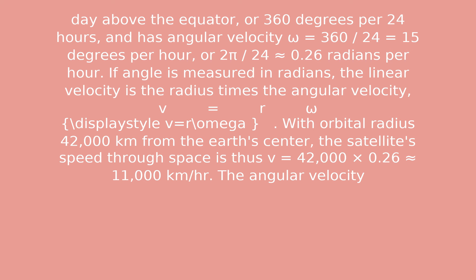If angle is measured in radians, the linear velocity is the radius times the angular velocity: v equals r·omega. With orbital radius 42,000 km from the Earth's center, the satellite's speed through space is thus v equals 42,000 times 0.26, approximately equals 11,000 km per hour.